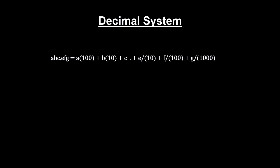This system is easily extended into the decimal number system by dividing by 10 for each position to the right of the decimal point, in much the same way we multiplied by 10 for positions to the left.